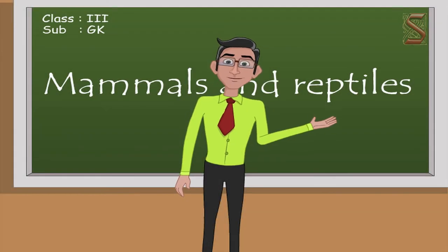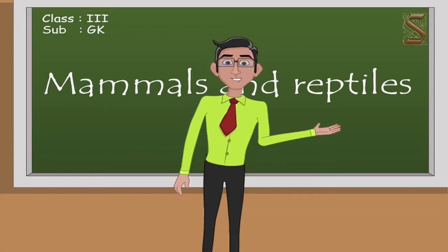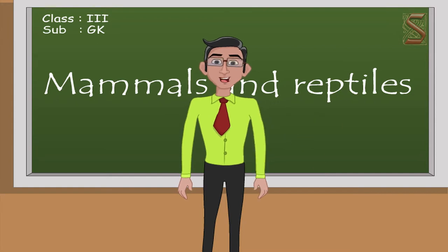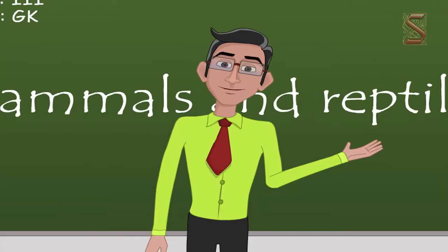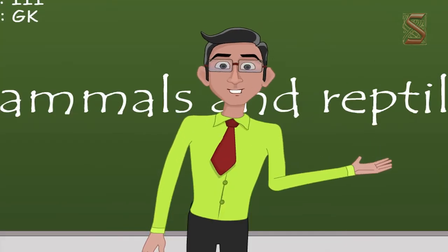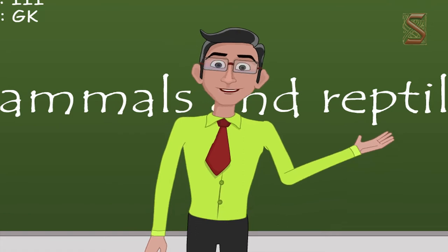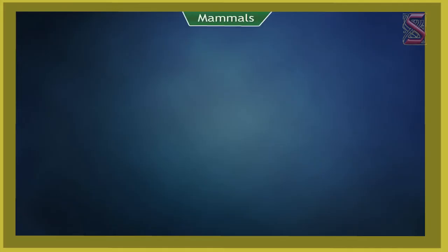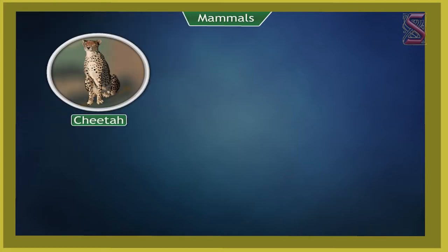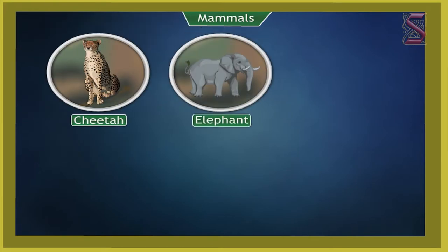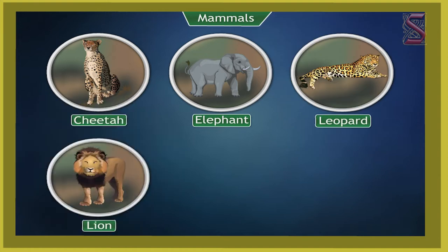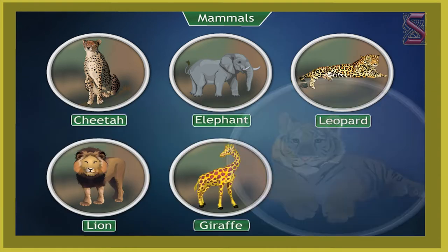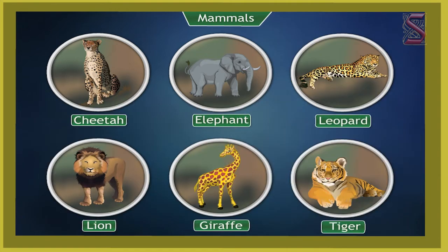Children, there are so many different types of animals in the world. Today we will learn the difference between the mammals and the reptiles. Some examples of mammals are the cheetah, elephant, leopard, lion, giraffe, and tiger.